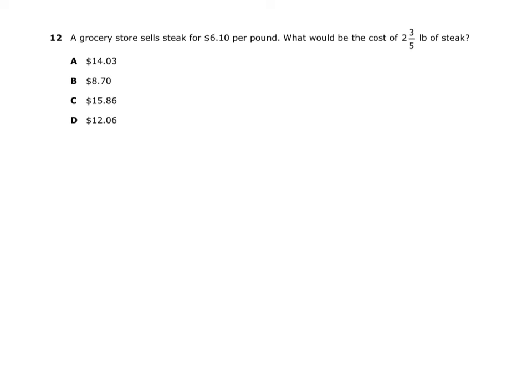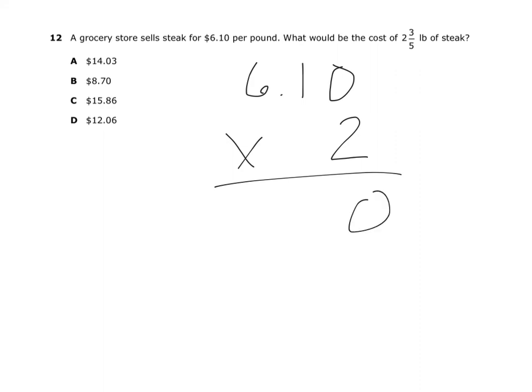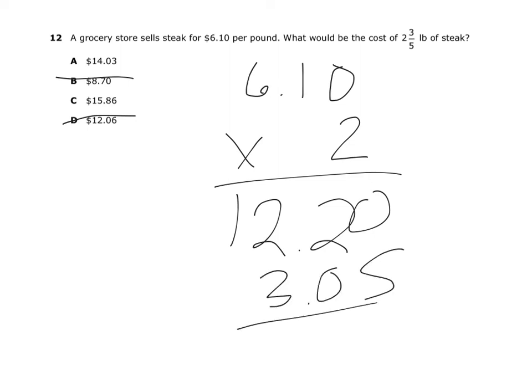In this question we're looking at unit rate and multiplying to figure out amounts. Steaks cost $6.10 per pound and they're buying 2 and 3 fifths pounds. Instead of multiplying the full fraction right away, I'll just multiply $6.10 times 2 first, which gives $12.20 — that automatically eliminates two answers, giving a 50/50 shot. Looking at the remaining fraction, 3 fifths is more than half. Half of $6.10 would be $3.05, so adding that gives $15.05 — meaning the answer can't be $14.03. So the answer is C, without even needing to fully work out the fraction.